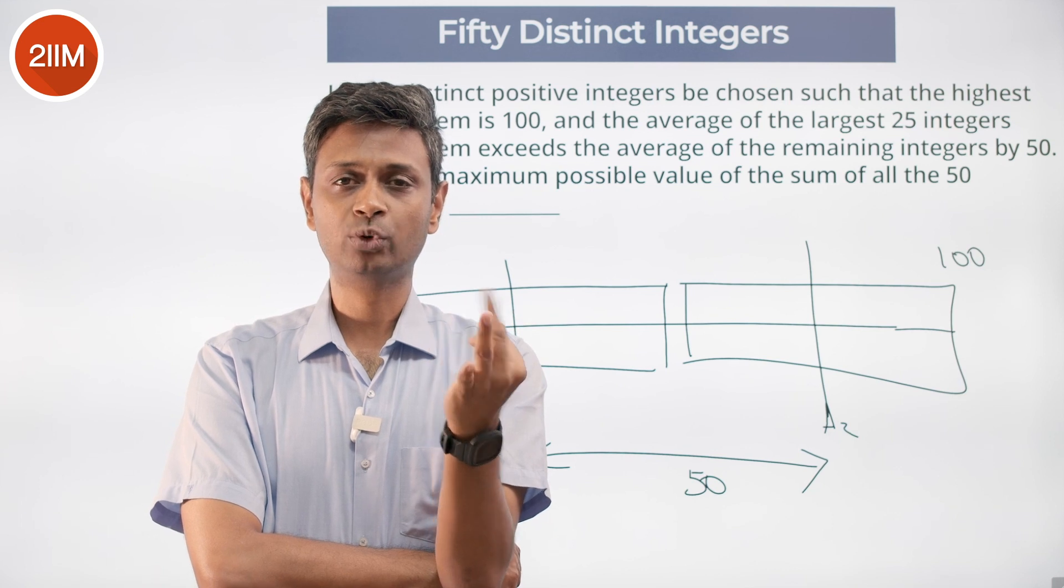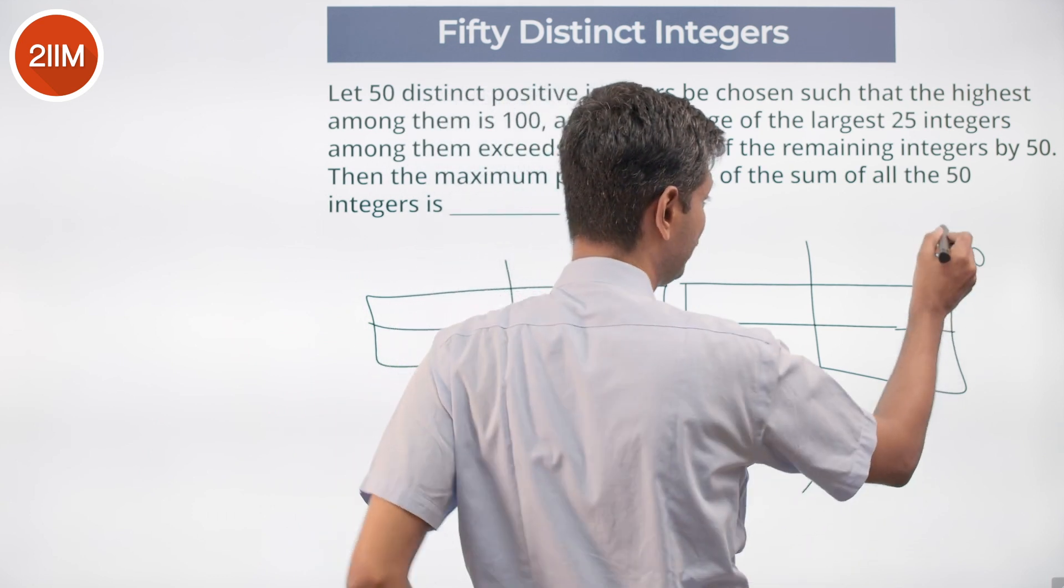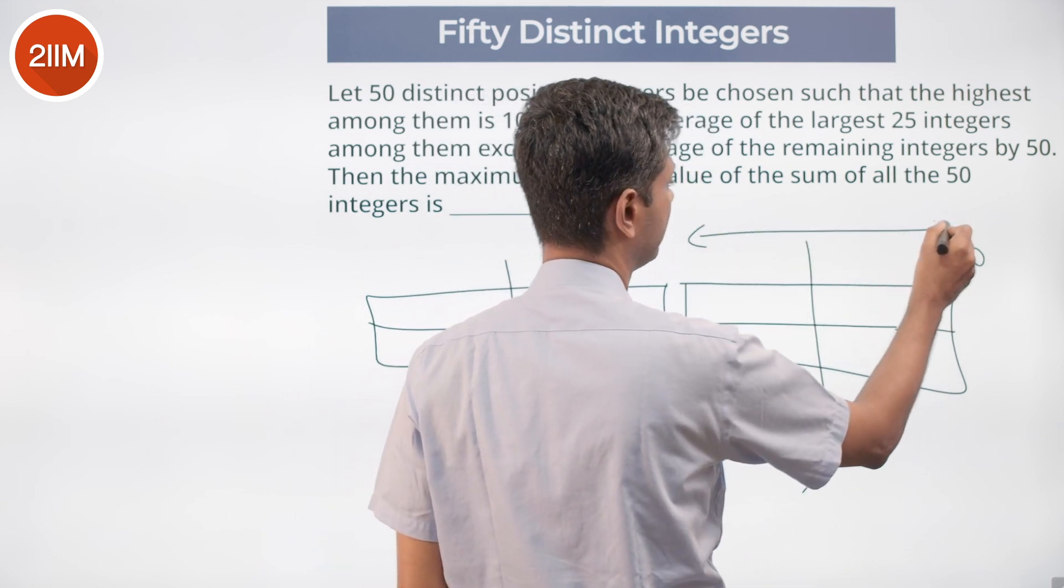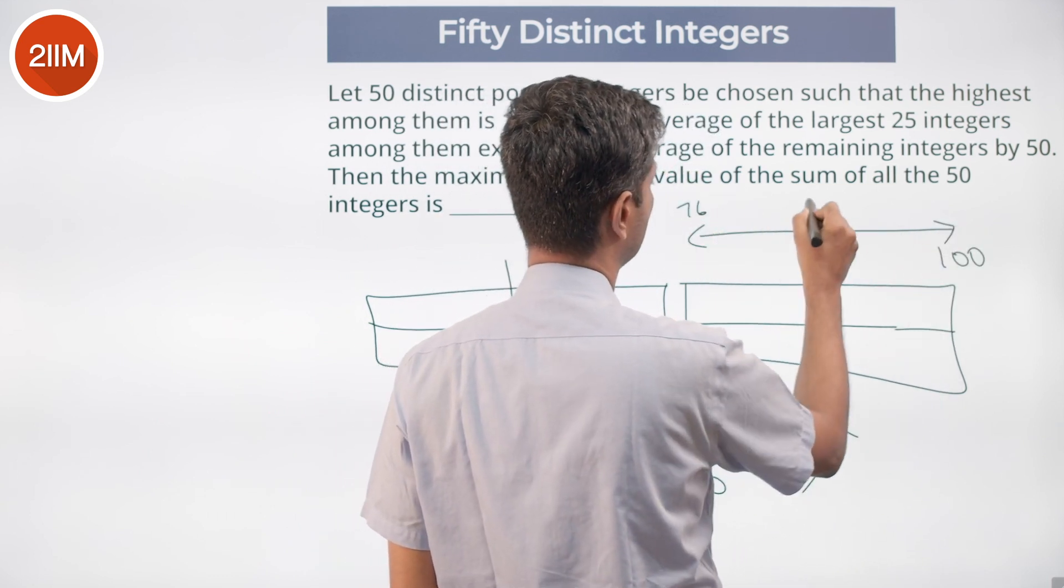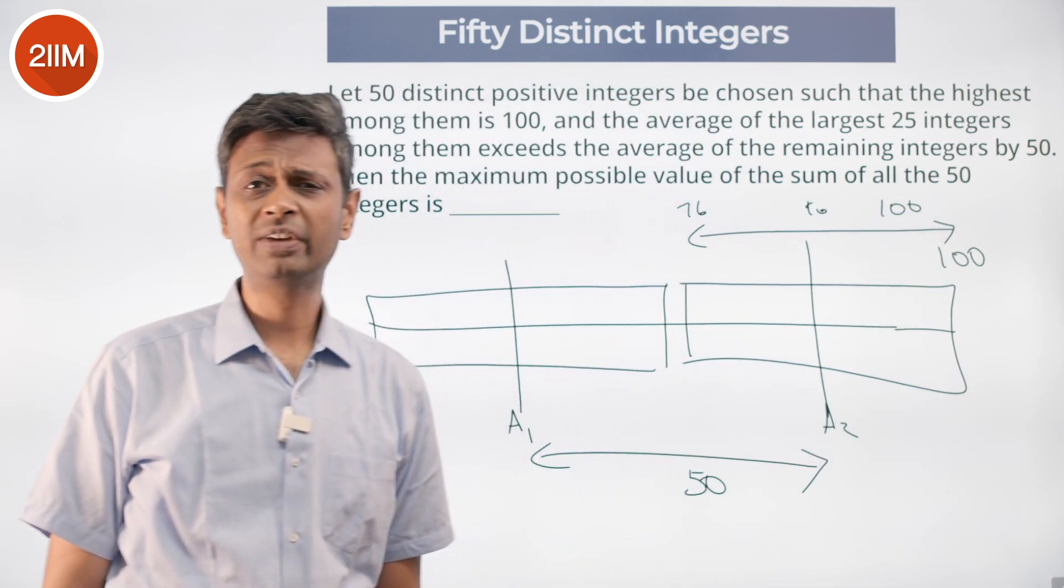97, 96, 95, 94, 93, 92, 91 and so on. That means I take 25 integers starting from 100, 76 to 100. Those are my 25 largest integers.